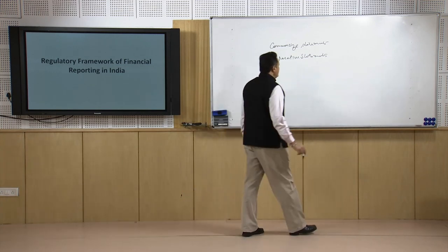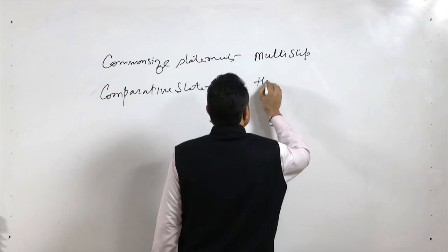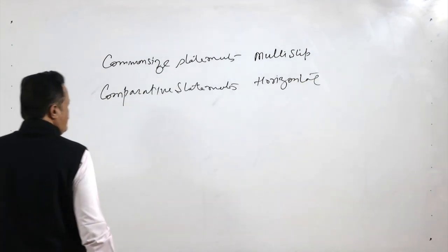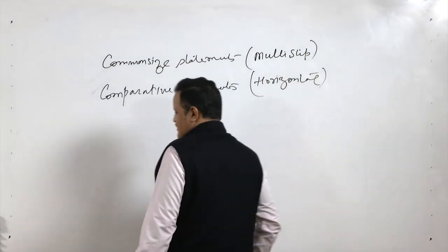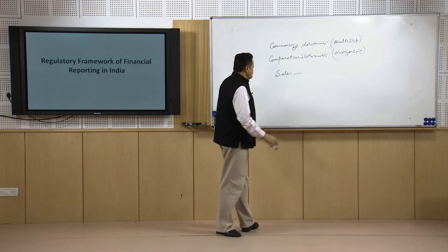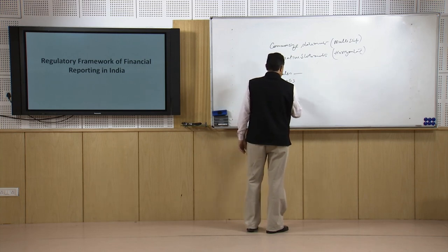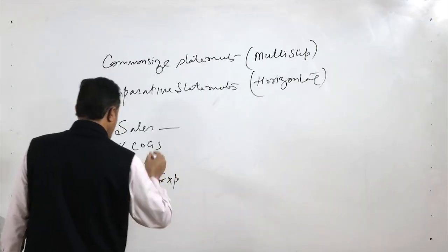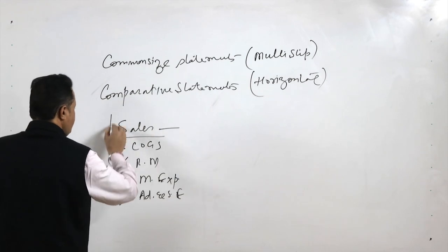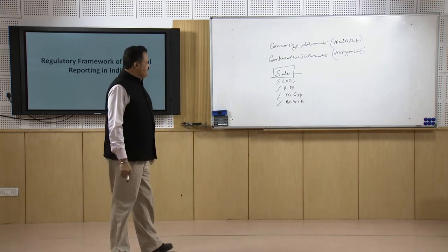Common size statements can also be called multi-step income statements, and here you call them vertical statements. In the common size statement, we take one important figure as common — for example, sales — and against that figure we compare the percentage of cost of goods sold, raw material, manufacturing expenses, and administrative and selling and distribution expenses, all as a percentage of sales. Taking one item as common and comparing other figures against it is how we prepare the common size statement.